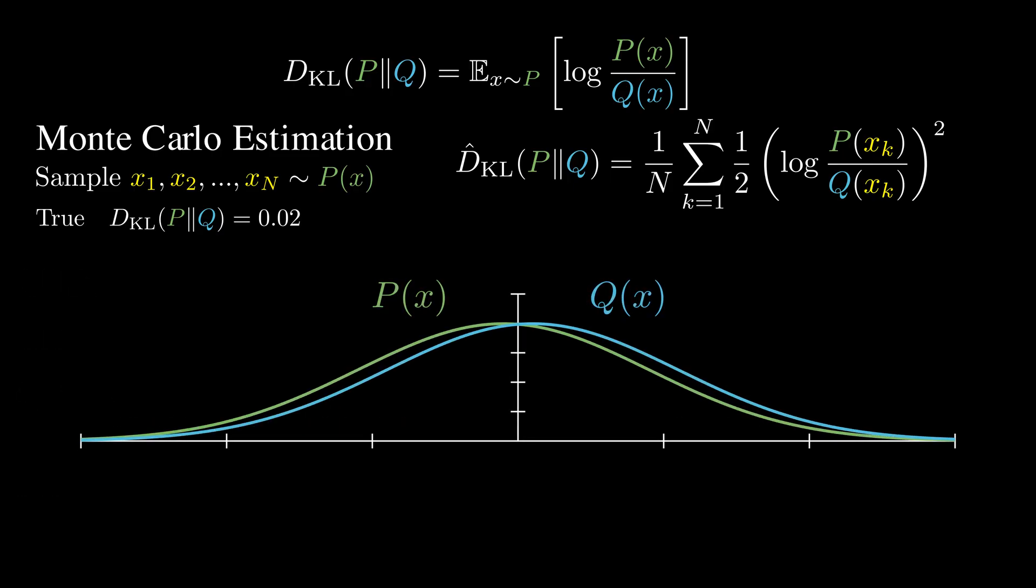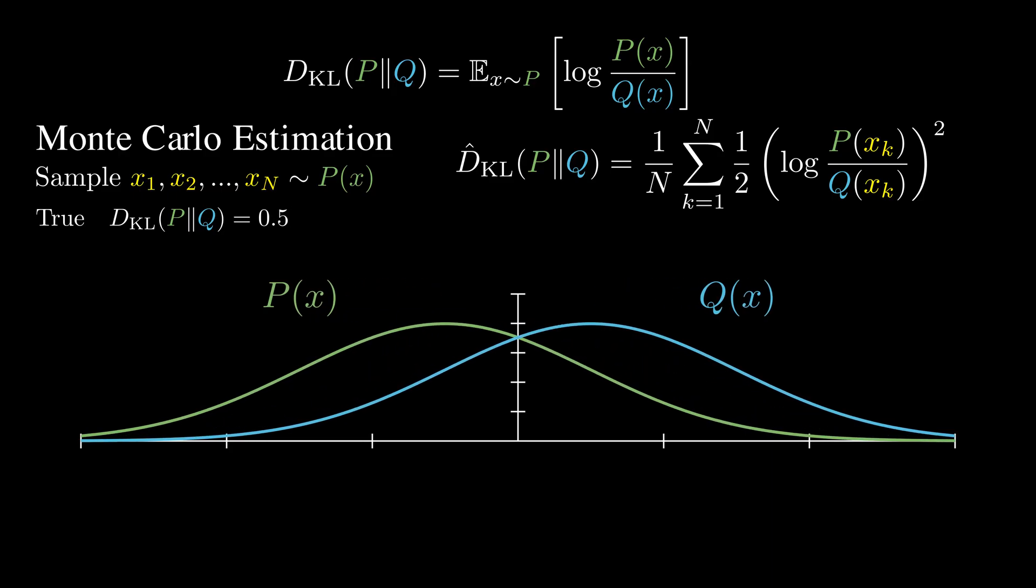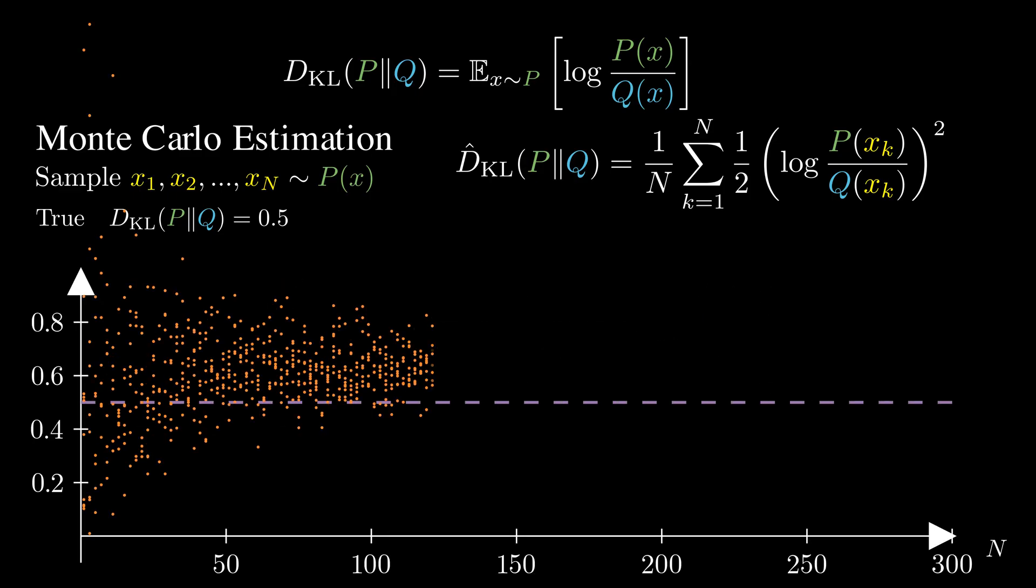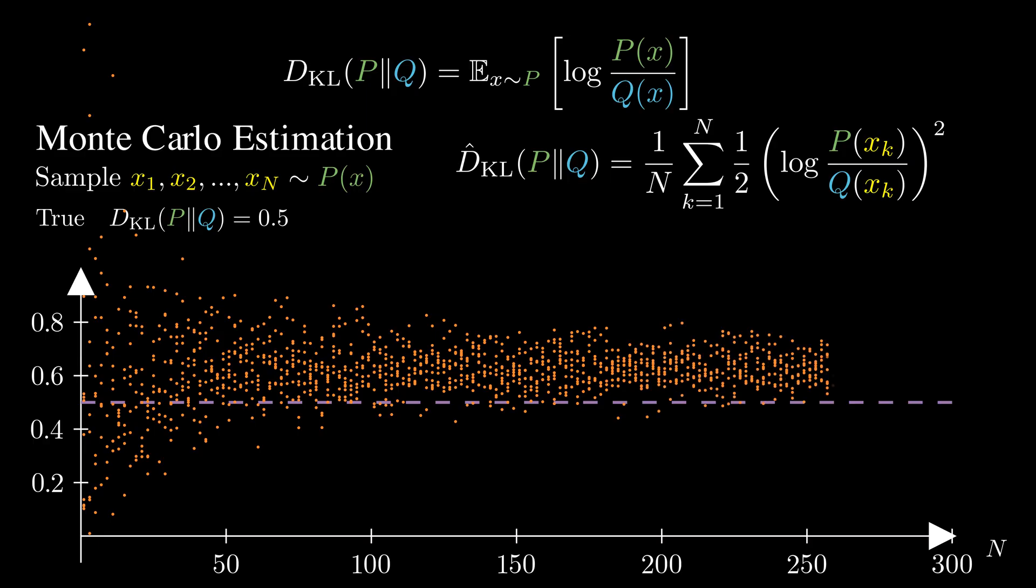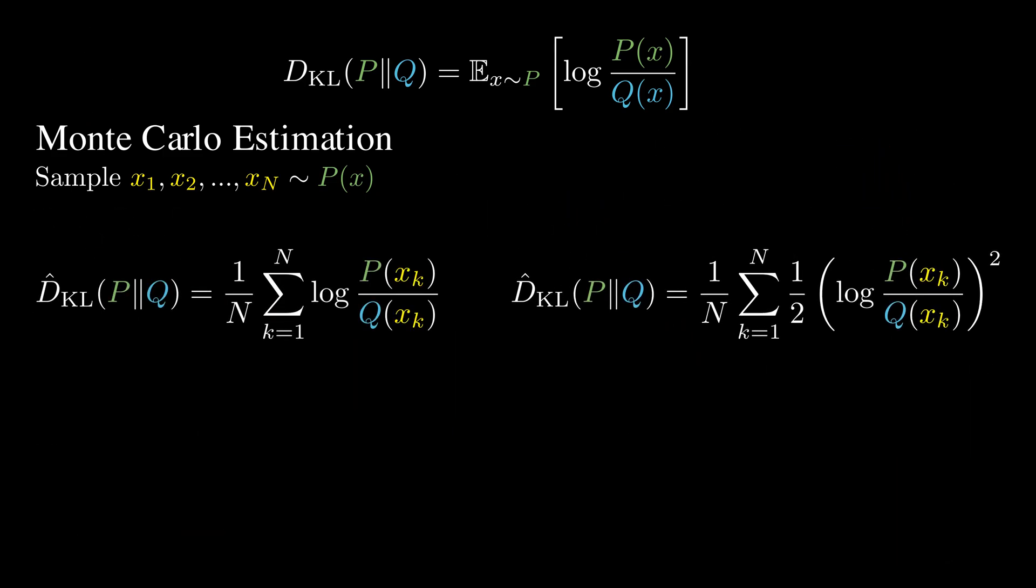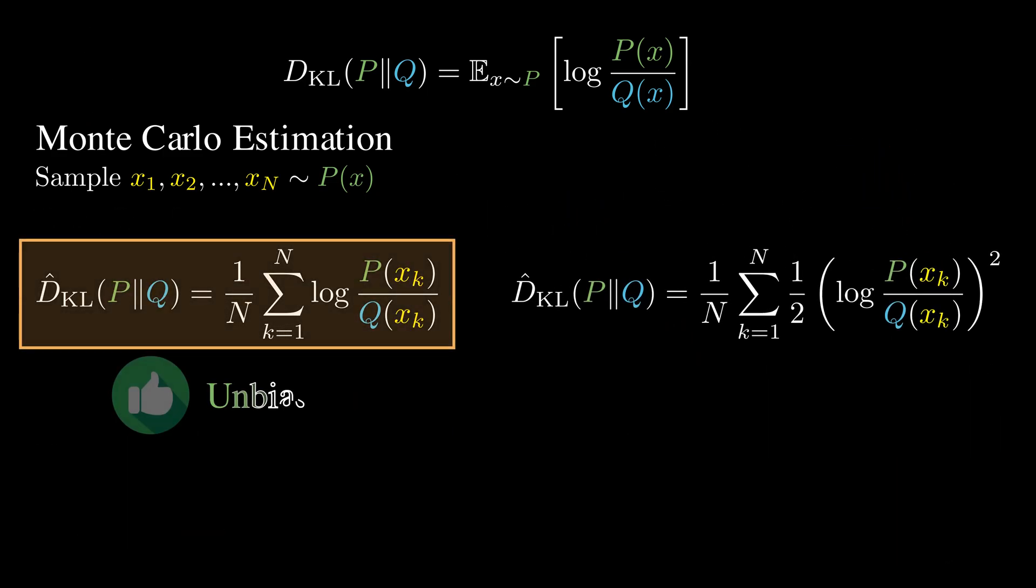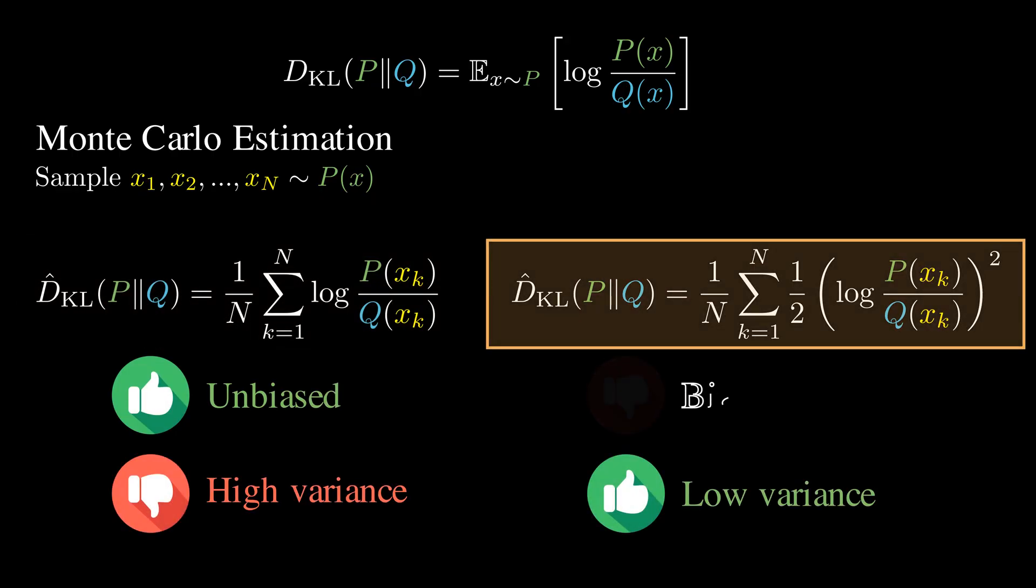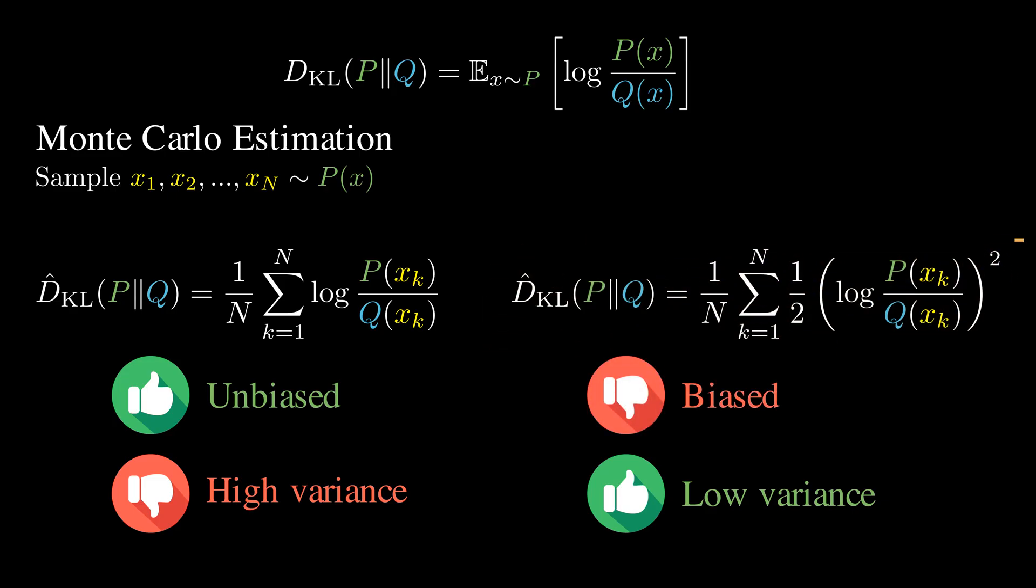But it's not always this simple. Let's test the same estimator when P and Q are further apart. Here the true KL divergence is 0.5. Oh no, this looks bad. Even with lots of samples, our estimates do not converge to the true value. This deviation from the true expectation is called bias. Here our estimator consistently overestimates the true value. Now we face a dilemma. On the one hand, the simple estimator is unbiased, but has high variance. On the other hand, the square estimator has lower variance, but is biased. Can we have the best of both worlds?